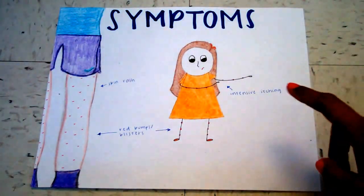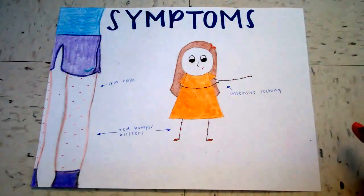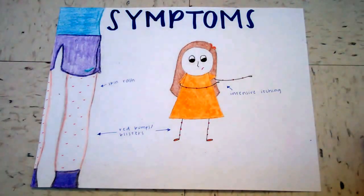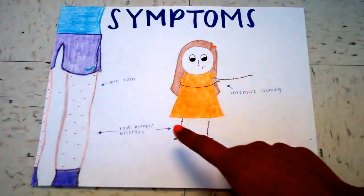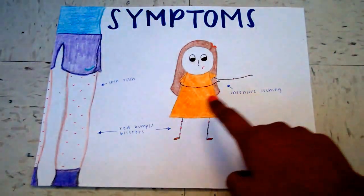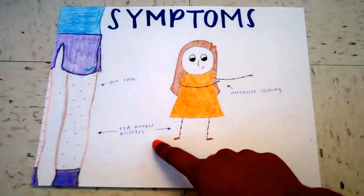Symptoms. The symptoms of scabies are skin rash, intense itching, spread bumps, or blisters.